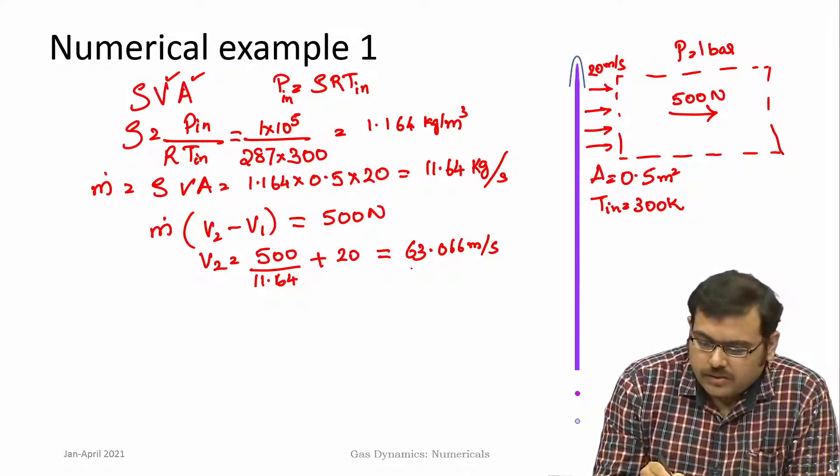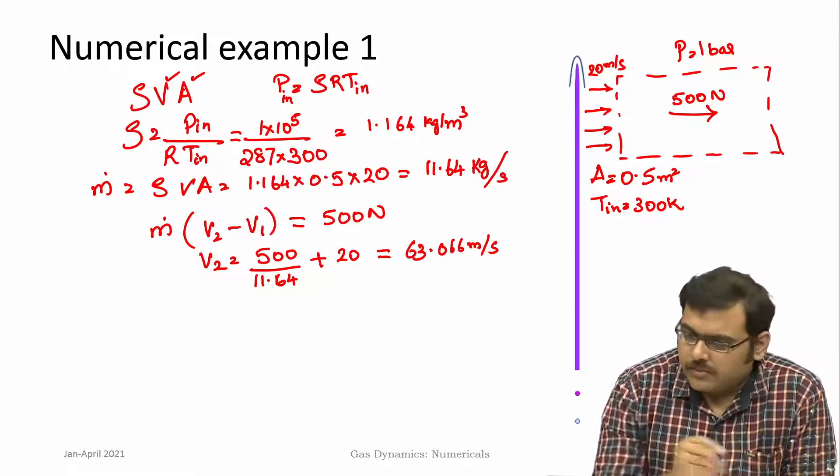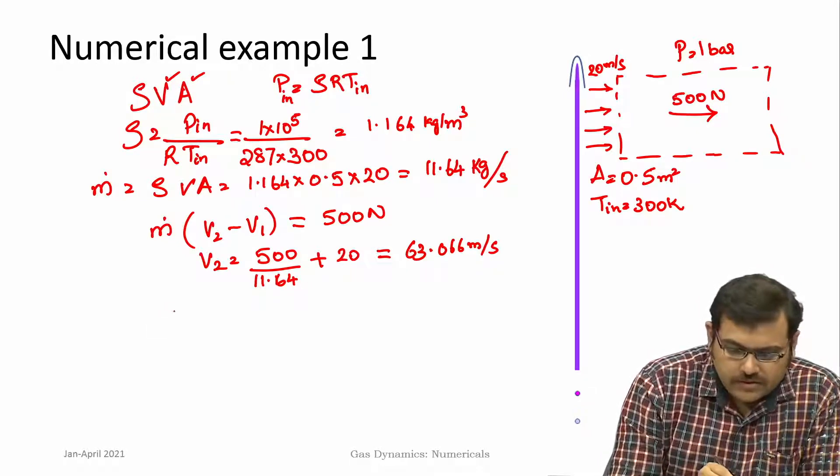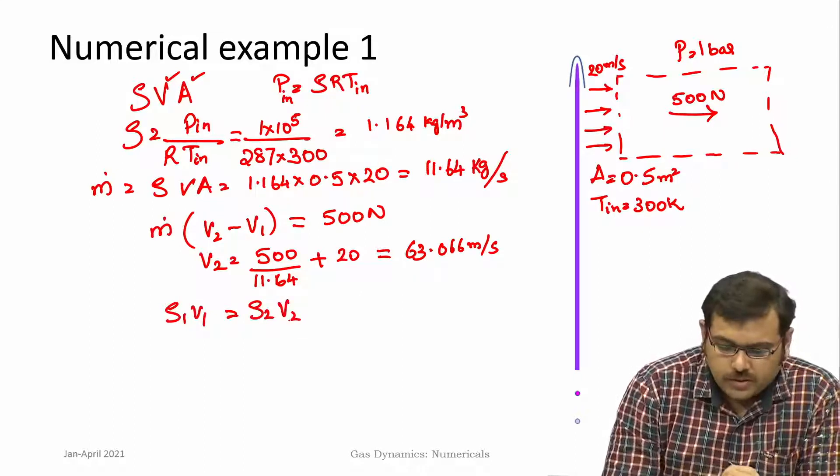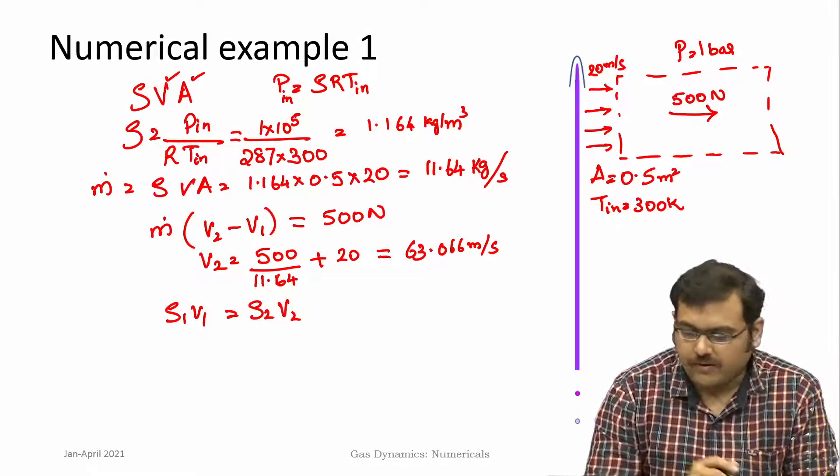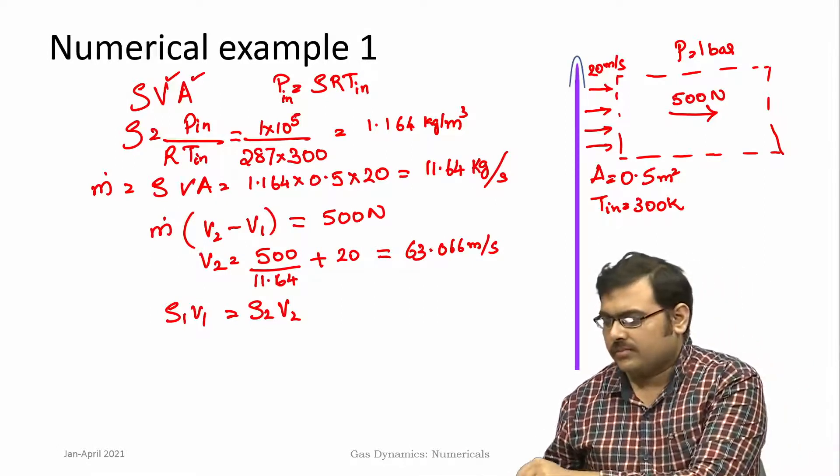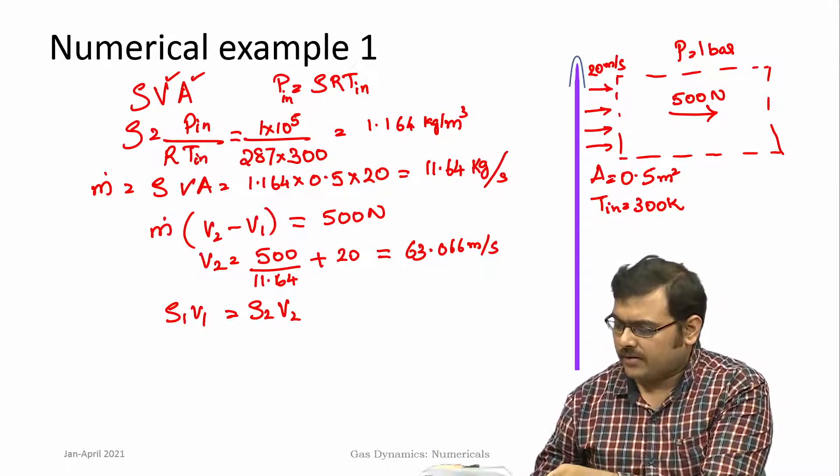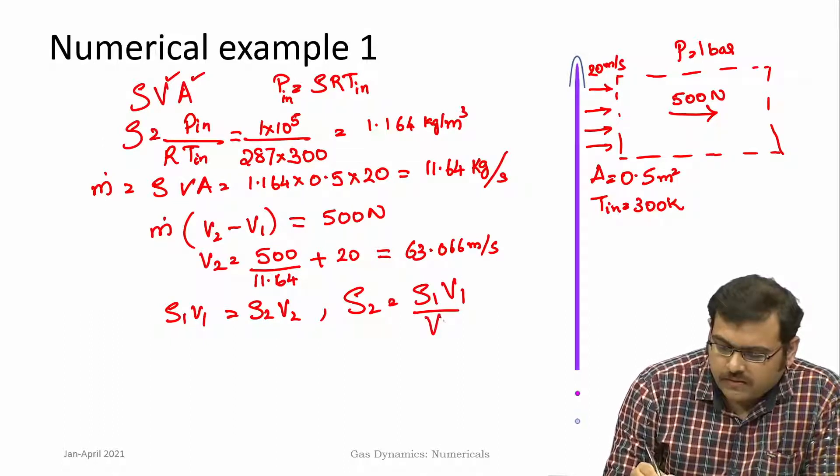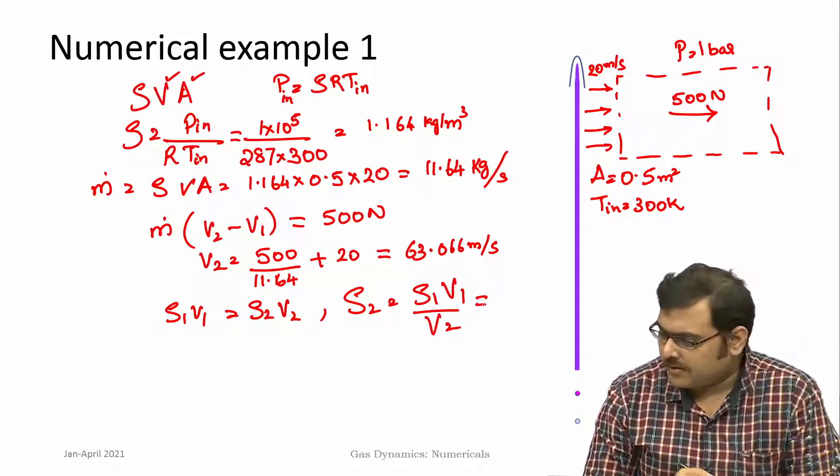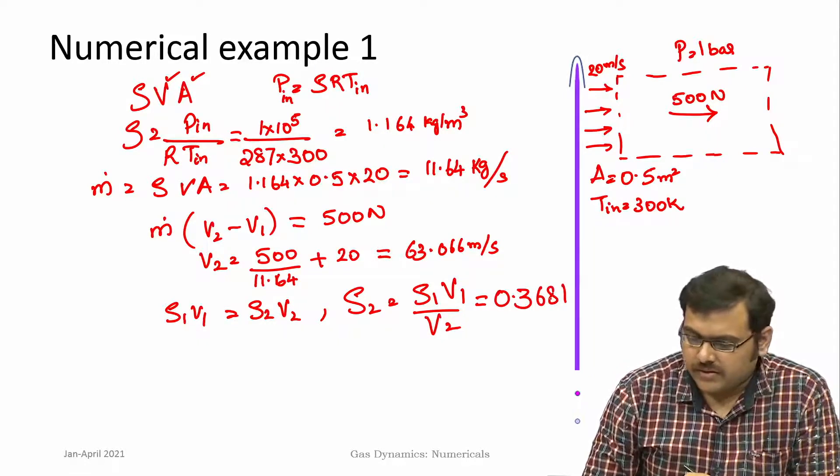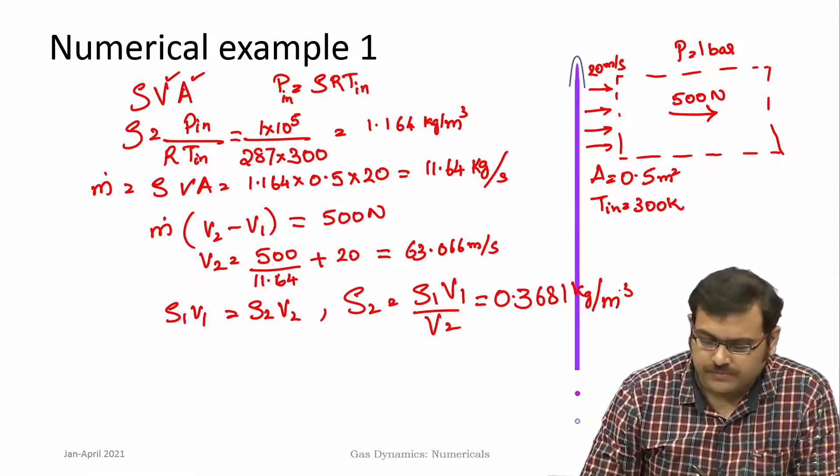Now we need to find what is the temperature. We can use mass conservation because rho_1 V_1 equals rho_2 V_2. We know both V_1 and V_2, so from here we can find out what is the density at section 2. Then you can write rho_2 is rho_1 V_1 by V_2. If you make the substitutions, you can get this density is 0.3681 kilogram per meter cube.